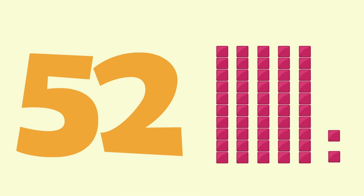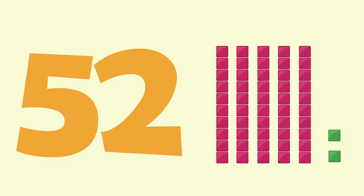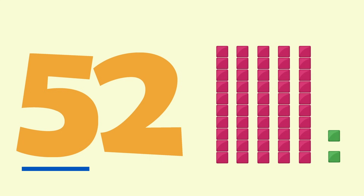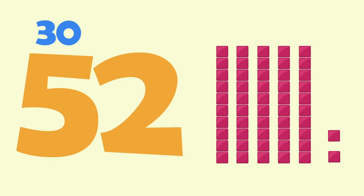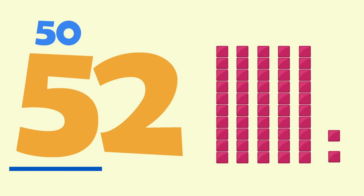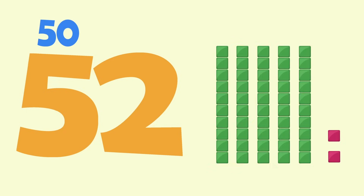Okay, here's the answer. The two is in the ones place, so it's just worth two. The five is in the tens place, so we'll have to count by tens five times: 10, 20, 30, 40, 50. The value of the five is 50.